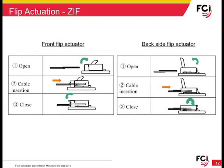There are two varieties of flip top actuators: front flip and backside flip. As the names imply, the actuator on the front flip style flips from the front of the connector, while the backside flip has the actuator rotating toward the back. Backside flip connectors are more popular, especially for applications where the cable may be routed upward from the connector, which could pose the possibility of disengaging the actuator on a front flip connector and allowing the cable to be released.